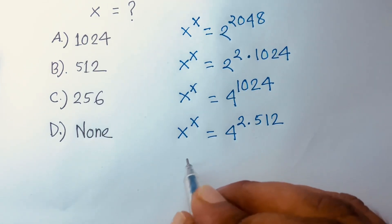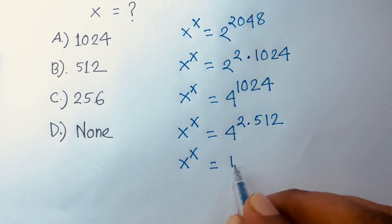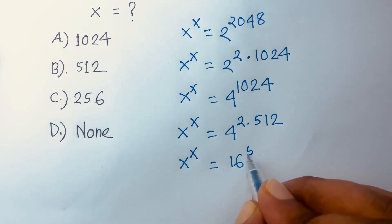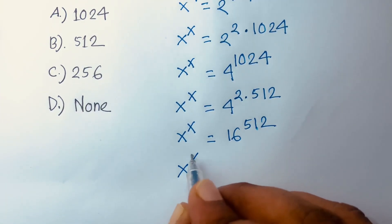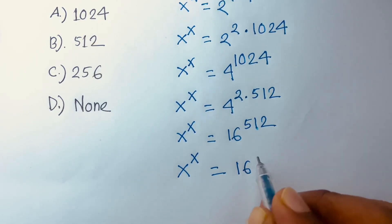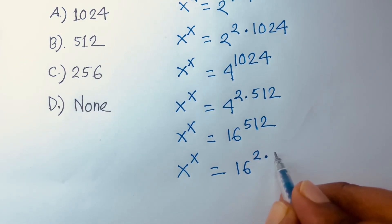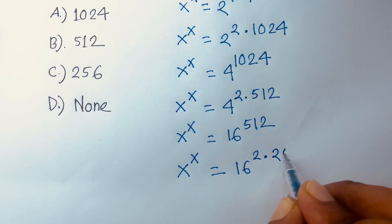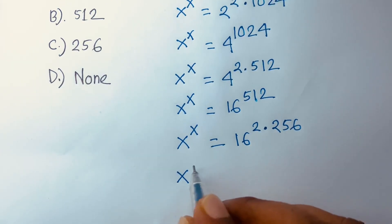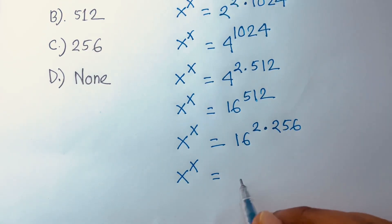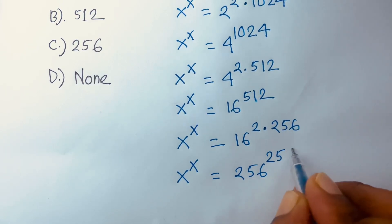This equation becomes x to the power x is equal to 4 squared, which is 16, to the power 512. Then I can say x to the power x is equal to 16 to the power 2 times 256 — because 2 times 256 equals 512. So x to the power x is equal to 16 squared, which is 256, to the power 256.